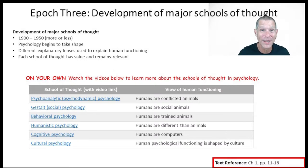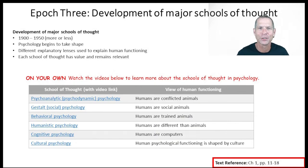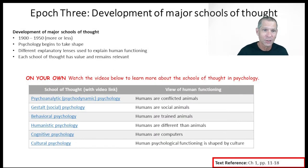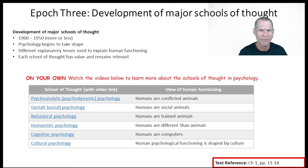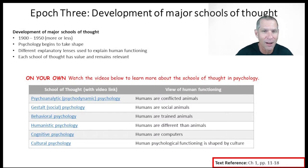In 1940, this thing called the computer was created. Computers are thinking machines — in a sense, a computer is kind of like an electronic brain. So cognitive psychologists say humans aren't animals; they're actually computers, and they process information just like computers. And then finally, there are psychologists who look at how culture affects our behavior — is everybody the same psychologically, or are there fundamental differences in how human beings perceive and function based upon the culture they come from?